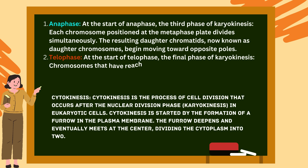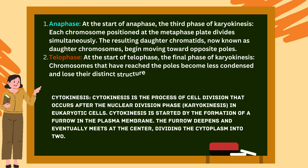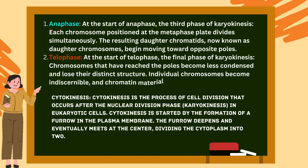Fourth is telophase. At the start of telophase, the final phase of karyokinesis, chromosomes that have reached the poles become less condensed and lose their distinct structure. Individual chromosomes become indiscernible, and chromatin material tends to gather at each pole.